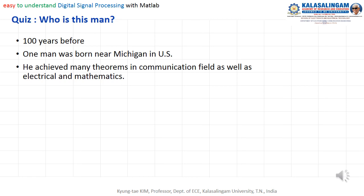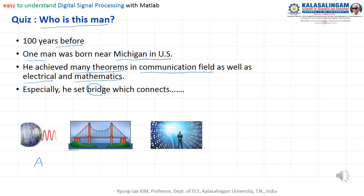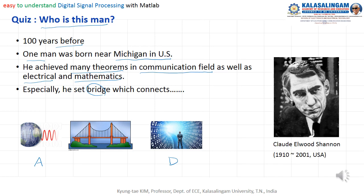About one hundred years before, one man was born who contributed to the communication field as well as electrical engineering and mathematics. Especially, he set the bridge between analog and digital. He is the famous person Shannon — the founder of information theory.